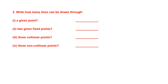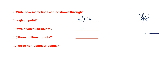Write how many lines can be drawn through the following. Suppose you have one point — through a single point, you can draw many lines. So you can write many or infinite; infinite means countless, unlimited. Next question: how many lines can be drawn through two given fixed points? Suppose you have two points — you can draw only one line through them. So the answer is one.